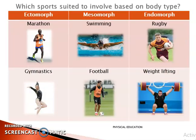Which sports should a person be involved in based on their body type? A person needs to check what type of body they have, and then choose their sport accordingly. For example, marathon and gymnastics — which body type can be involved in these sports? Ectomorphs, because they have less fat.